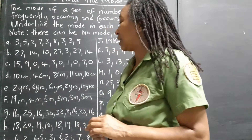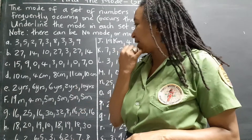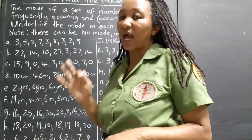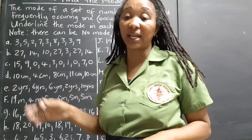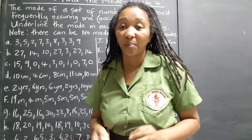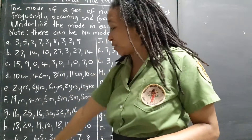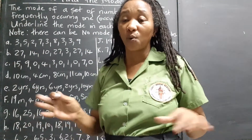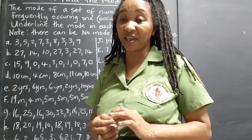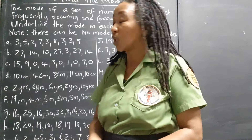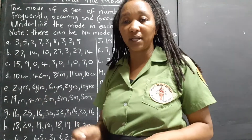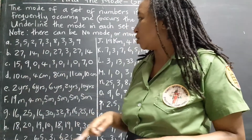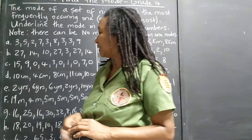Typically, the mode is the number you're seeing most often from the set — it stands out. However, you might have two or three numbers with the same number of listings, and there's no limit to how many numbers can be the mode, as long as they share the highest frequency compared to others in the list.